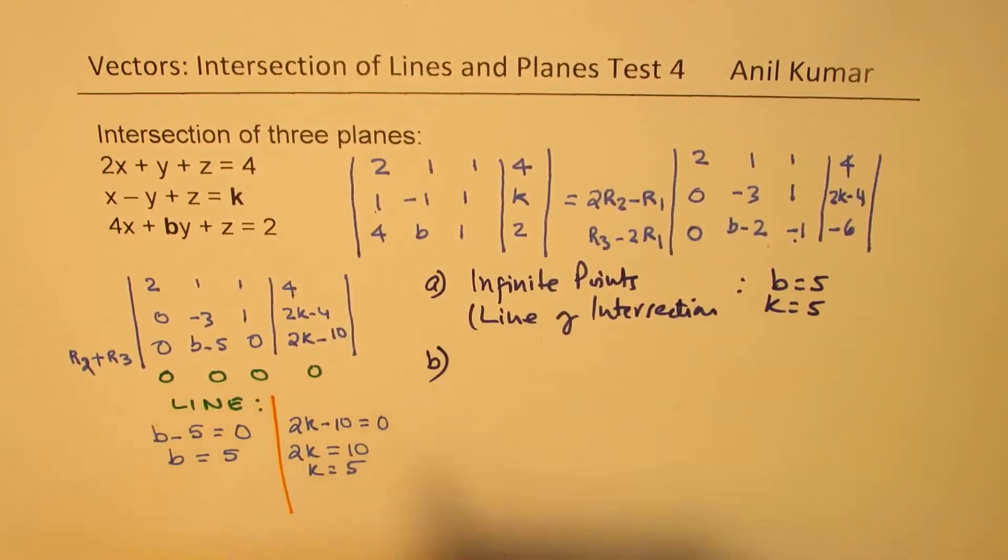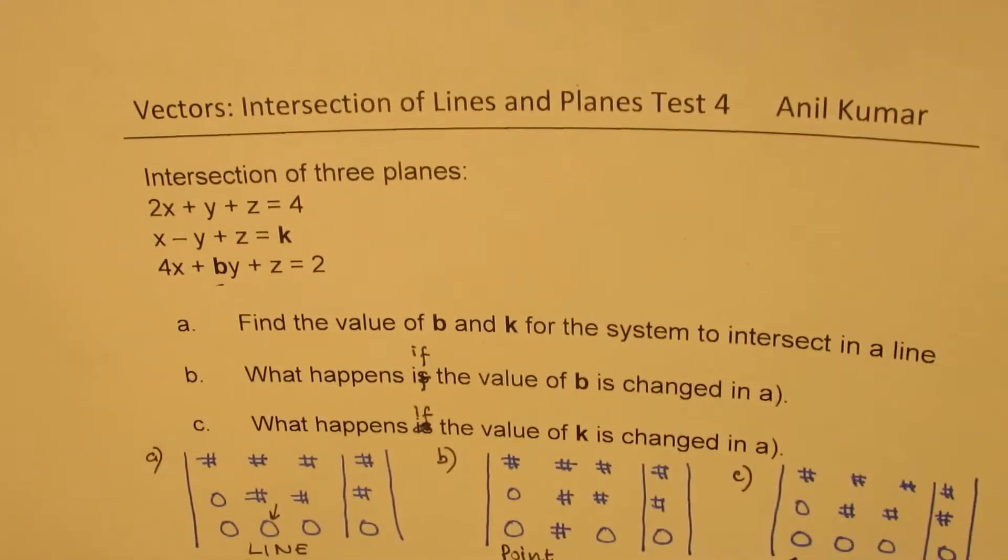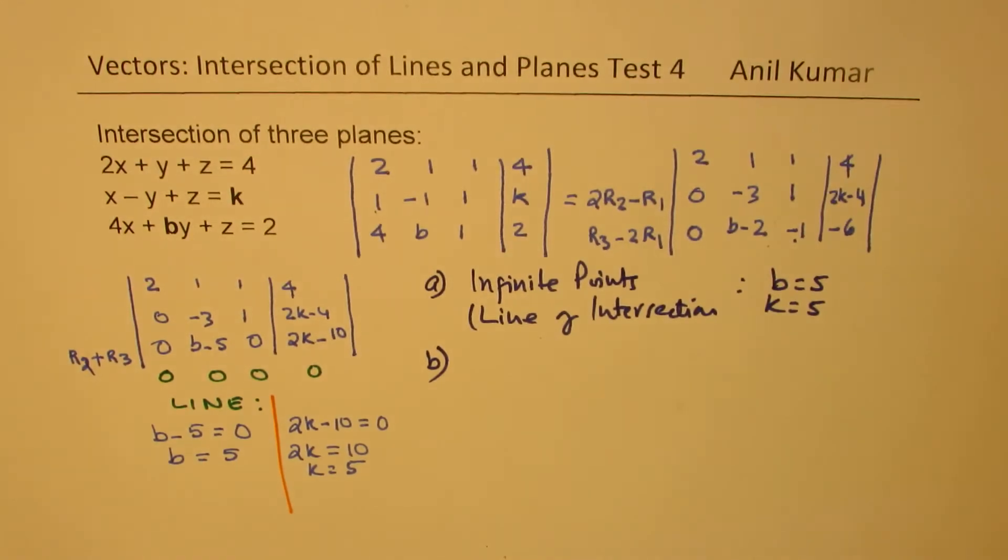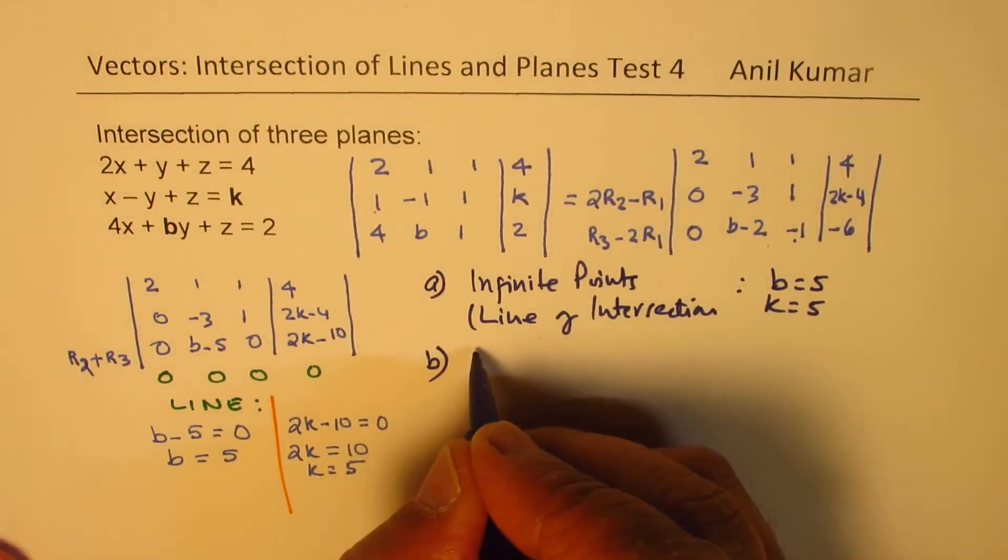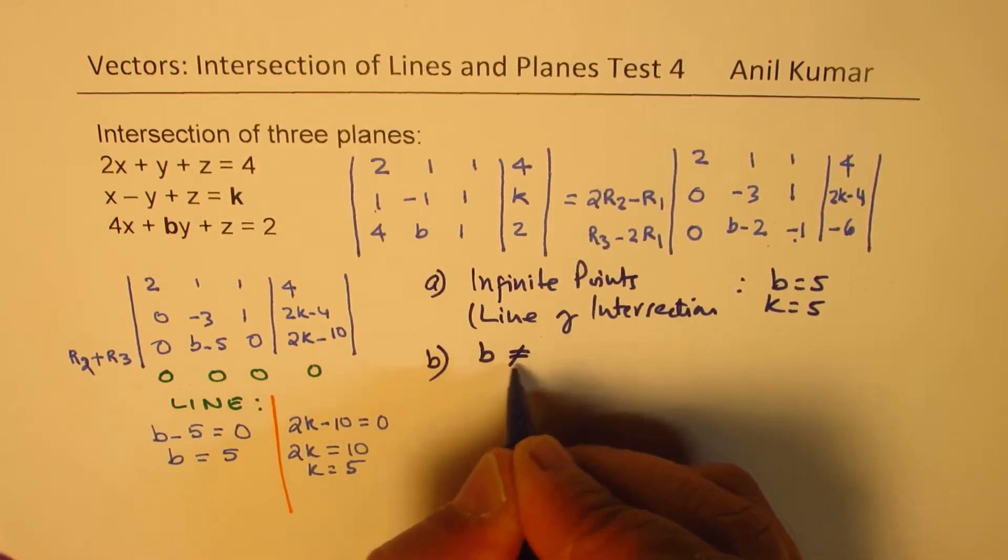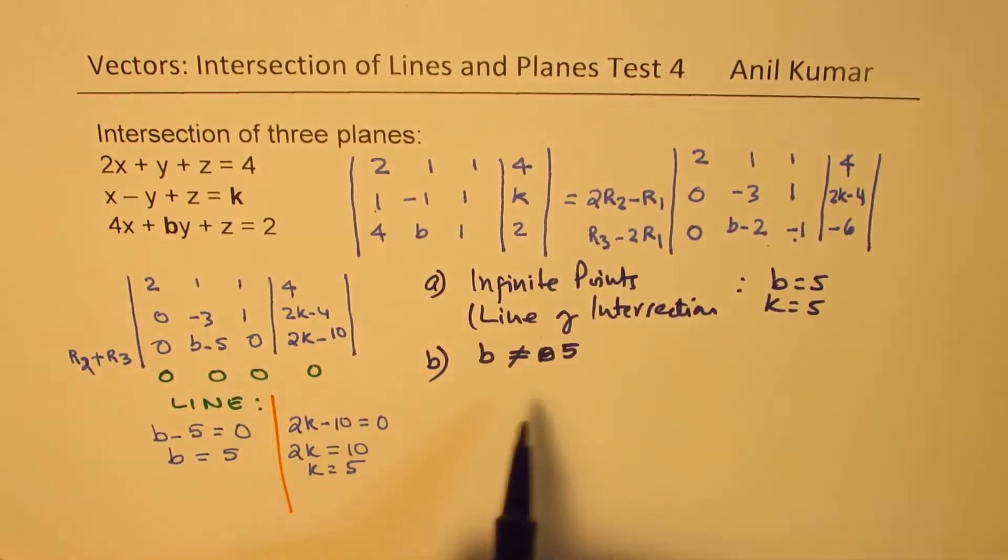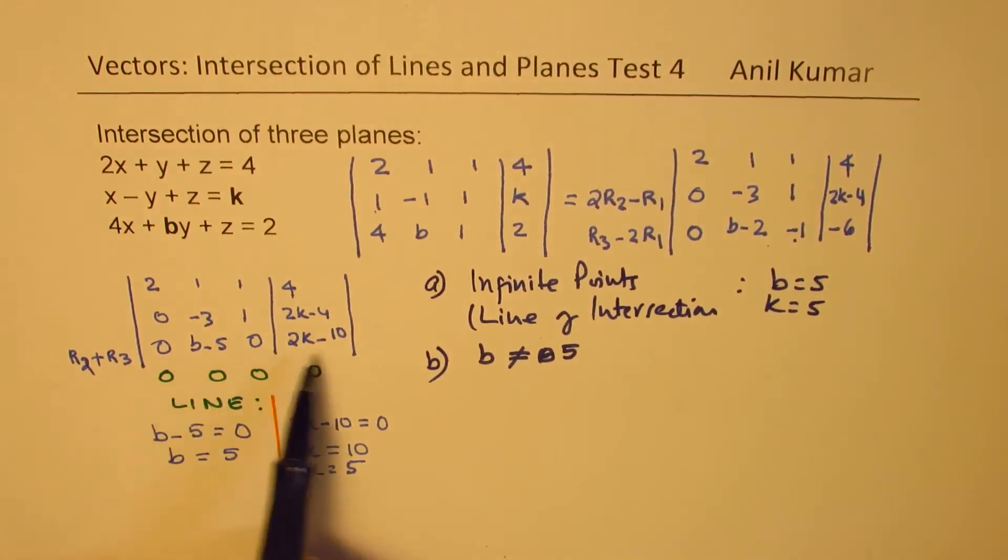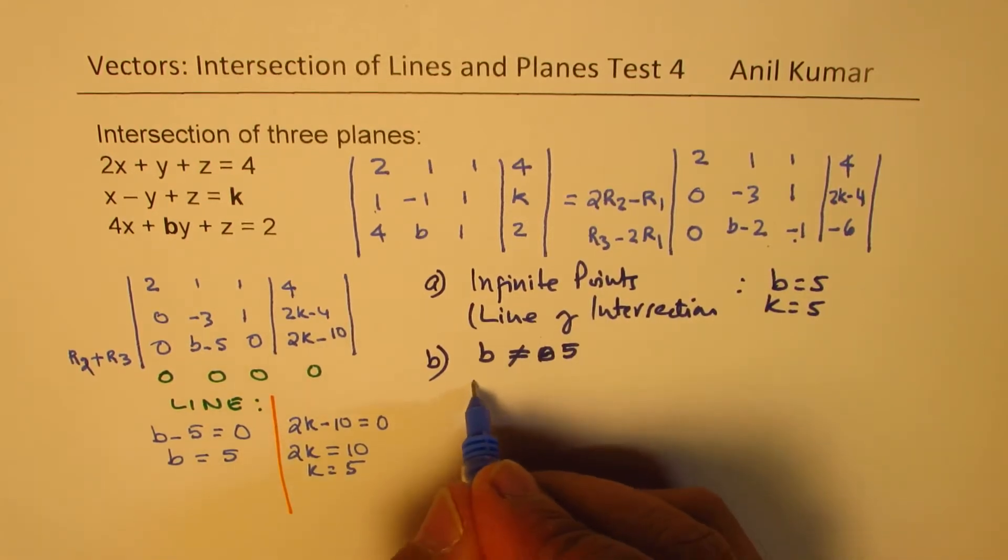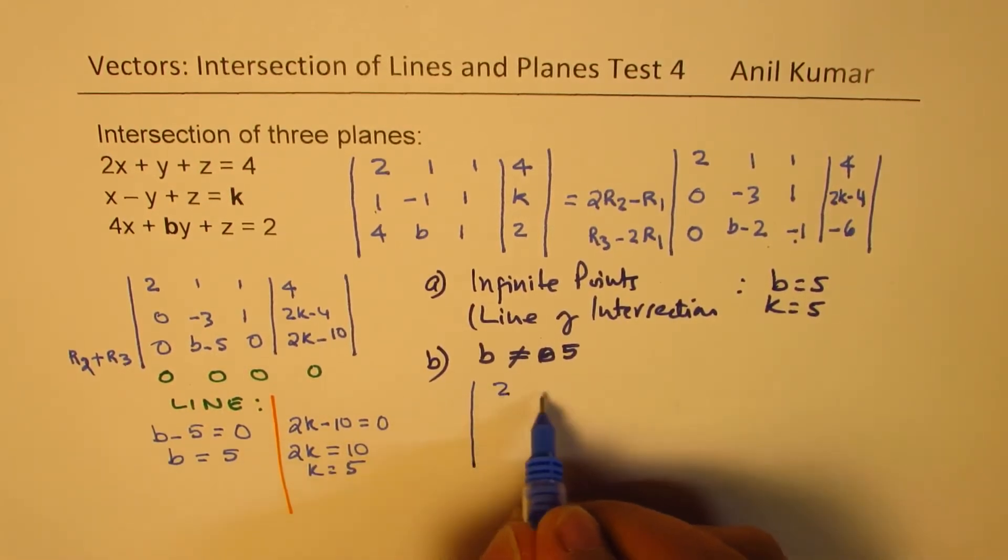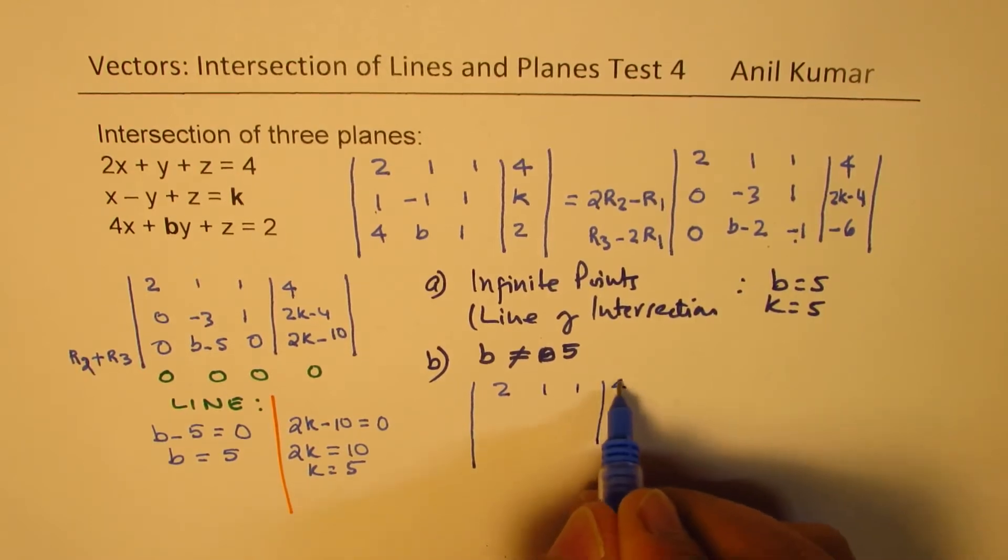Now part b. Part b of the equation was, what happens if the value of b is changed in a. So if b is not equal to 5. So if b is not equal to 5, in that case, what will happen? It means we are keeping 0 here. So in that case, we'll have a situation which is kind of like this. We'll have 2, 1, 1, 4. 0 minus 3, 1.